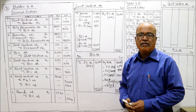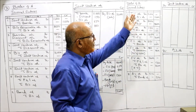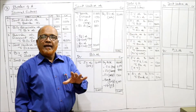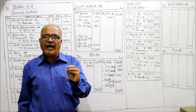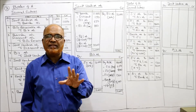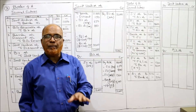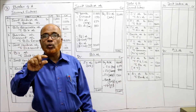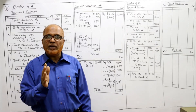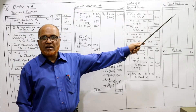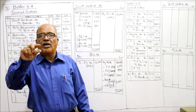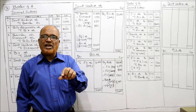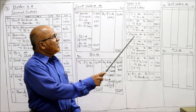Now we come to the books of B. We pass journal entries and ledger accounts in the books of B. A has purchased 10,000 rupees worth of timber and spent 1,000 rupees expenses, total 11,000 rupees spent by A. In the books of B, the entry will be: Joint Venture Account Dr. to A's Account - 11,000 - being the timber purchased and expenses paid by Mr. A.